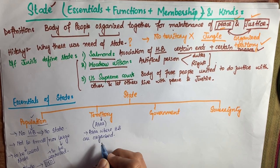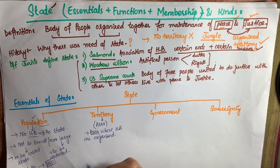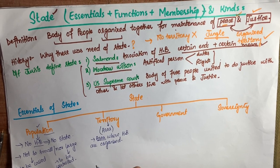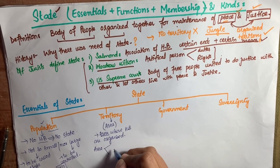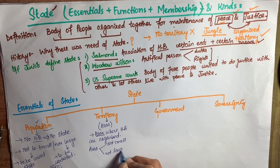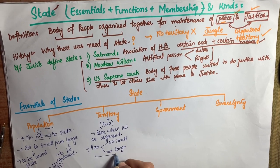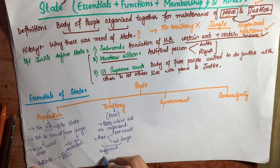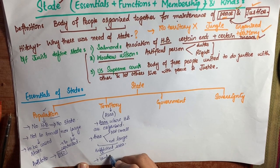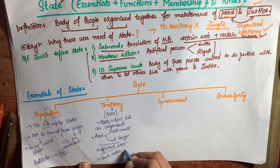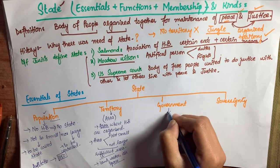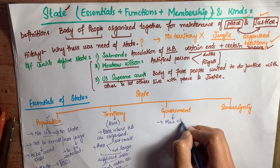Next is territory, meaning the area where human beings are organized. The area should be neither too small nor too large — it should be sufficient. Without an area, people cannot live in an organized form. The area consists of land, water, and airspace.